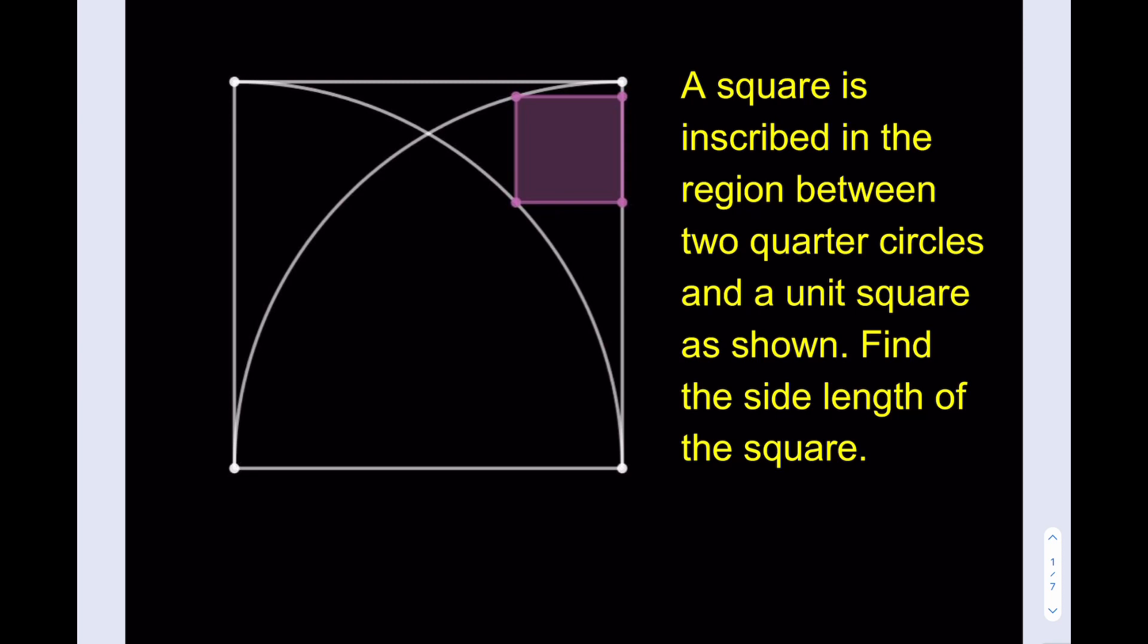I think, needless to say, we do have two quarter circles with radius 1, right? Because they're inside a unit square. So, as always, let's make some meaningful connections.